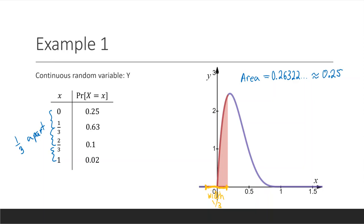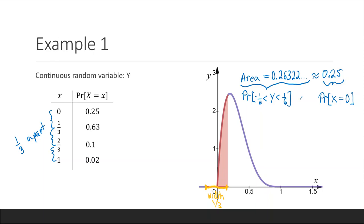When we calculate this area, one can show that the shaded area is 0.26322, which is approximately 0.25. This 0.25 is the probability that x equals 0, while the area 0.26322 is the probability that y is between negative one-sixth and one-sixth. So this probability on the left is approximately the probability on the right.